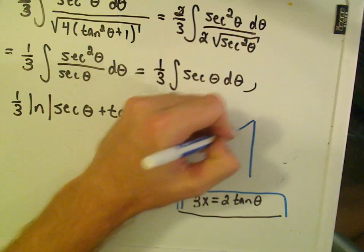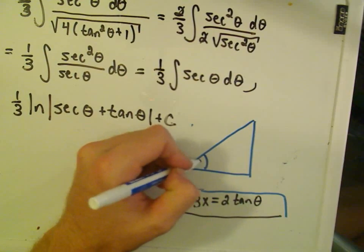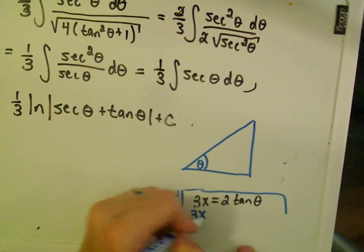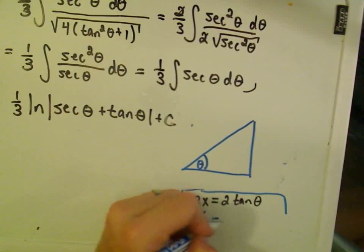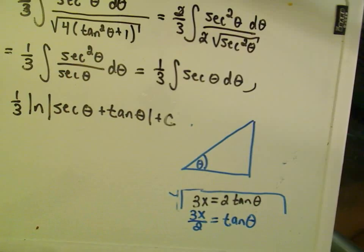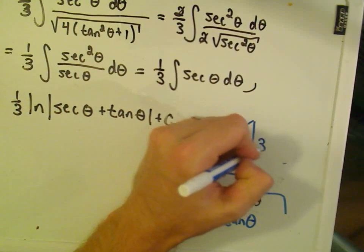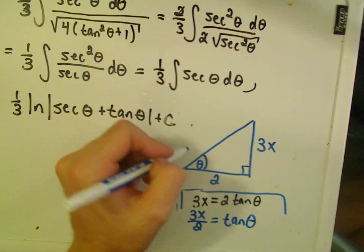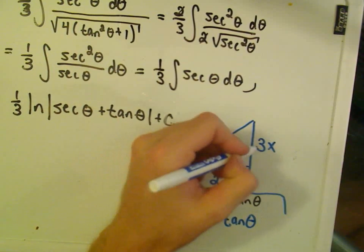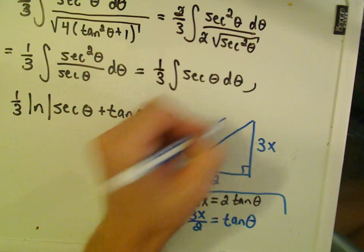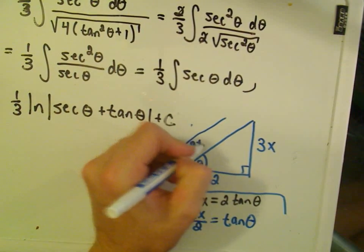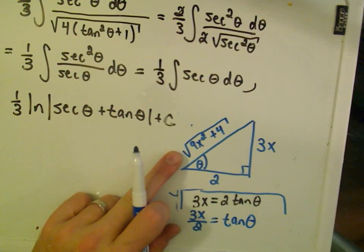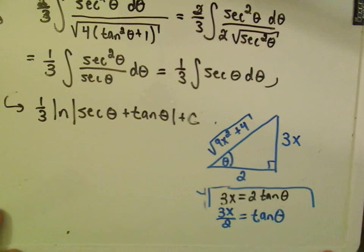So I'm going to make my right triangle. So here's theta. Notice I can solve for tangent theta and get 3x over 2 equals tangent theta. And remember with right triangles tangent is opposite over adjacent. You can use Pythagorean theorem to solve for the missing side. So it's this side squared plus this side squared, the square root of it. Well, that'll just give you 9x squared plus 4, which is conveniently the original square root we were trying to get rid of in the first place.